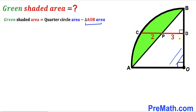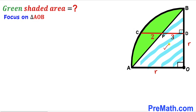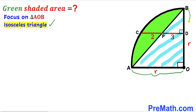Our task is to calculate the area of the quarter circle and the area of triangle AOB. So we need to find the radius of this quarter circle, which I'll label as lowercase r. Focusing on right triangle AOB, we can see it is an isosceles triangle since side AO equals side BO. Therefore both base angles are 45 degrees.